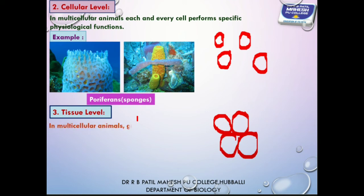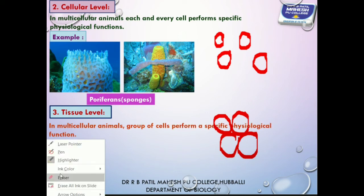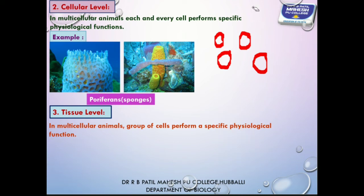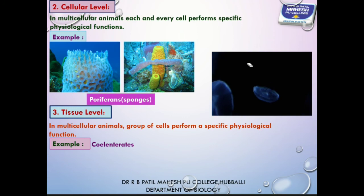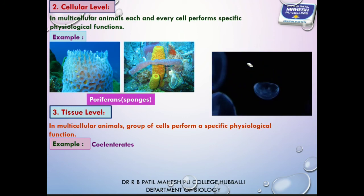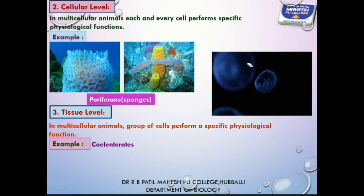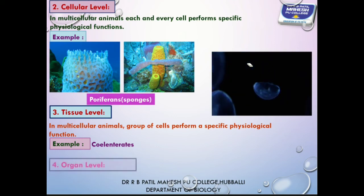In tissue grade, multicellular animals have groups of cells performing specific functions. It includes two phyla: Phylum Ctenophora and Phylum Cnidaria — the two groups of animals which exhibit tissue grade of organization.